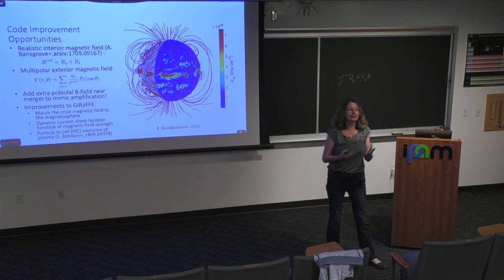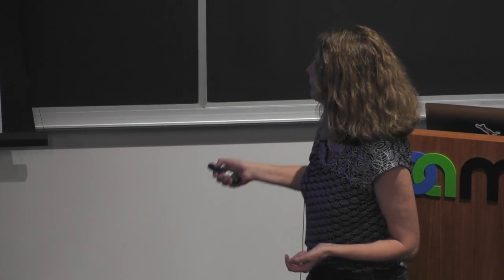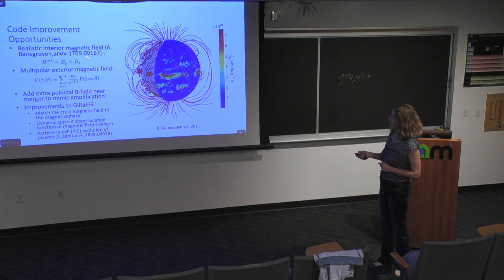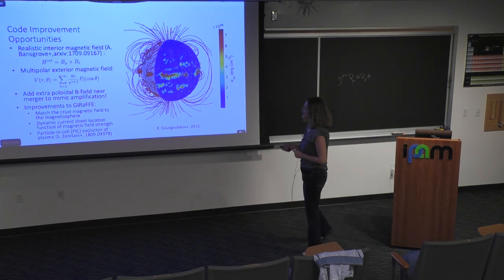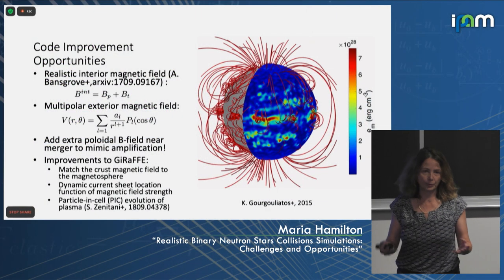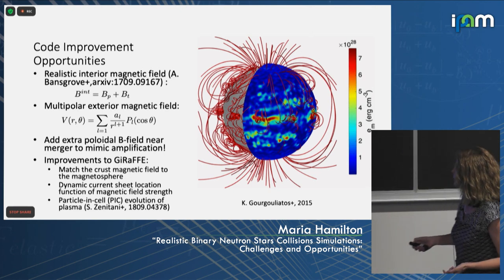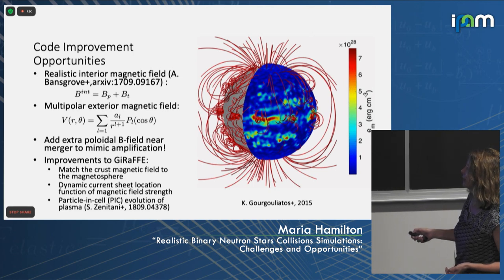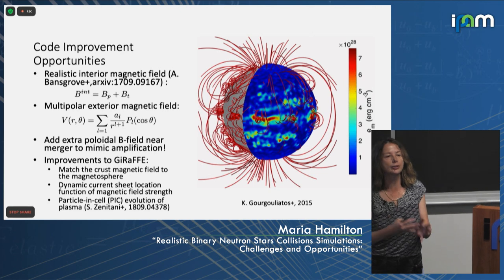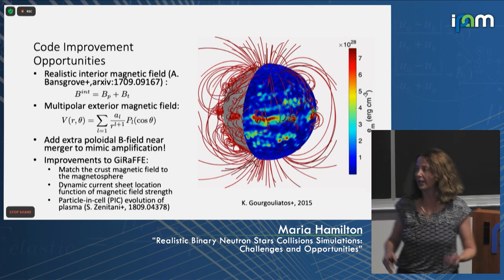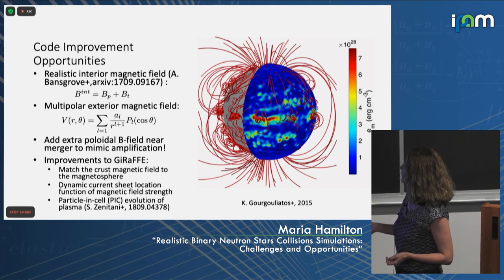The magnetic field structure both inside and outside neutron stars is still open to debate, especially after NICER reports. A realistic interior magnetic field has to contain both poloidal and toroidal magnetic field components. We do have to add multipoles — we can't continue with just a dipolar magnetic field. We have to make it multipolar and be very careful to match the internal and external magnetic field at the crust. That is a code improvement opportunity. Near the merger, you also need to add an external magnetic field; the papers with Spritz just put that in by hand near the merger, and I think that's one good solution.